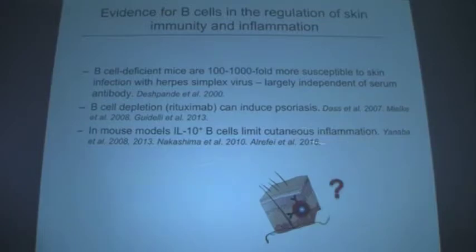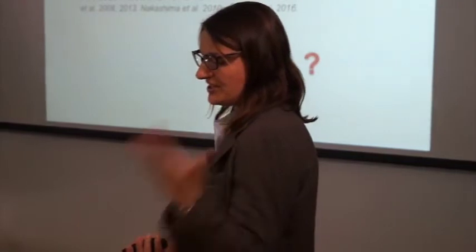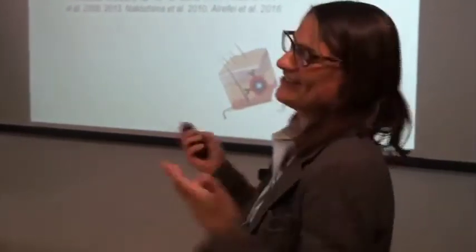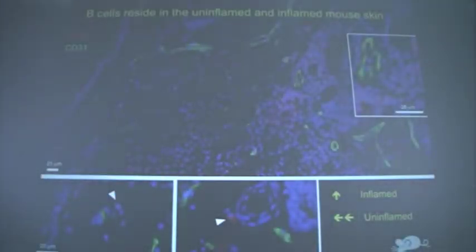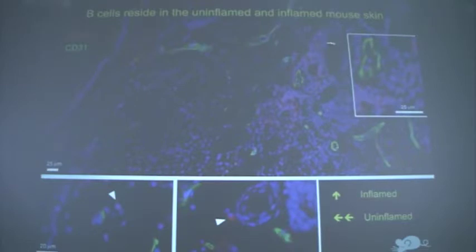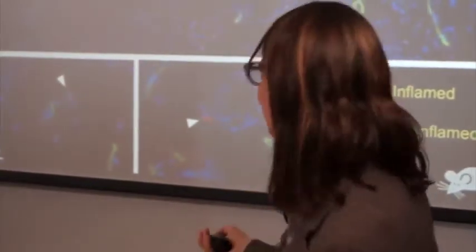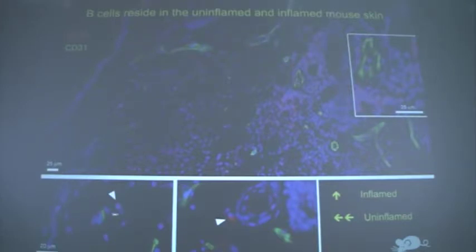The first question was: are B cells actually in the skin? In inflamed mouse skin, using histology with blood vessels marked in green, we see many B cells in the tissue — not intravascular. In the absence of inflammation, lymphocytes are harder to find, but we do find B cells even in uninflamed skin, always in the dermis, never in the epidermis — including next to hair follicles. They are definitely in the skin.